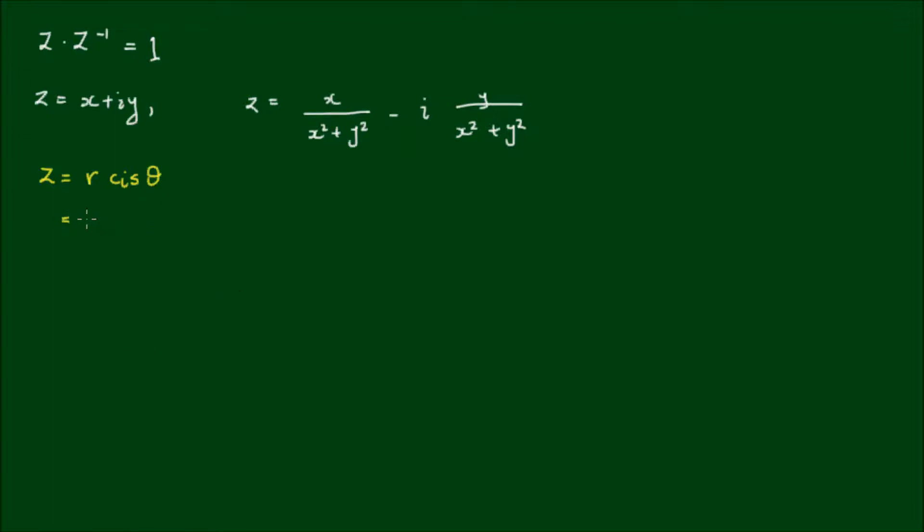And we can express this more formally as r times (cos θ plus i sin θ). And if I take r into the brackets, I get r cos θ plus i times r sin θ.